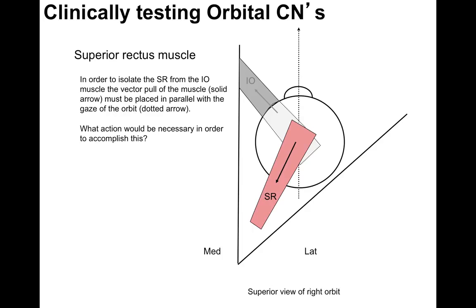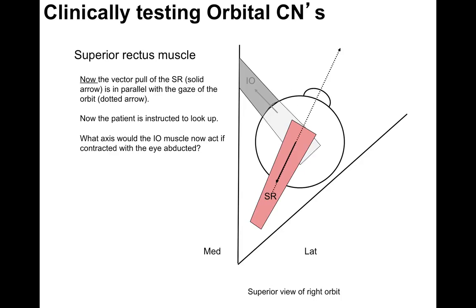The superior rectus muscle is shown here in pink and the inferior oblique is greyed out. In order to isolate the superior rectus from the inferior oblique muscle, the vector pull of the muscle — the solid arrow — must be placed in parallel with the gaze of the orbit — the dotted arrow. To accomplish this, you have the patient abduct their eye. Now the vector pull of the superior rectus is in parallel with the gaze of the orbit, and the patient is instructed to look up.